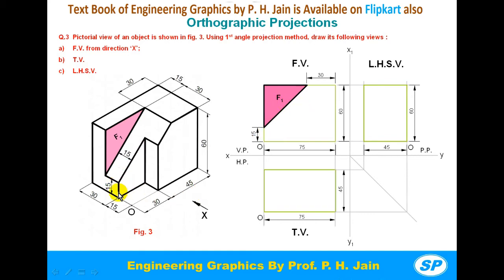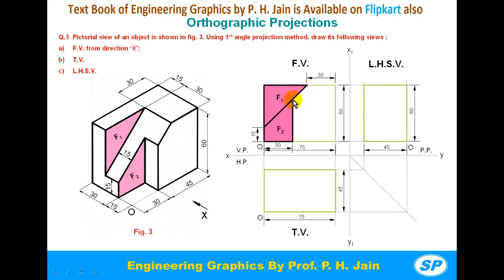Similarly, draw face F2, which has four corners. The first corner of F2 is at the same level as the corresponding corner of F1. The second corner will be seen at origin O. The third corner is 30 mm to the right of origin O. The fourth corner is found by drawing a vertical line up to the inclined line. Join these four points with thick lines to get the F2 vertical face in the front view.